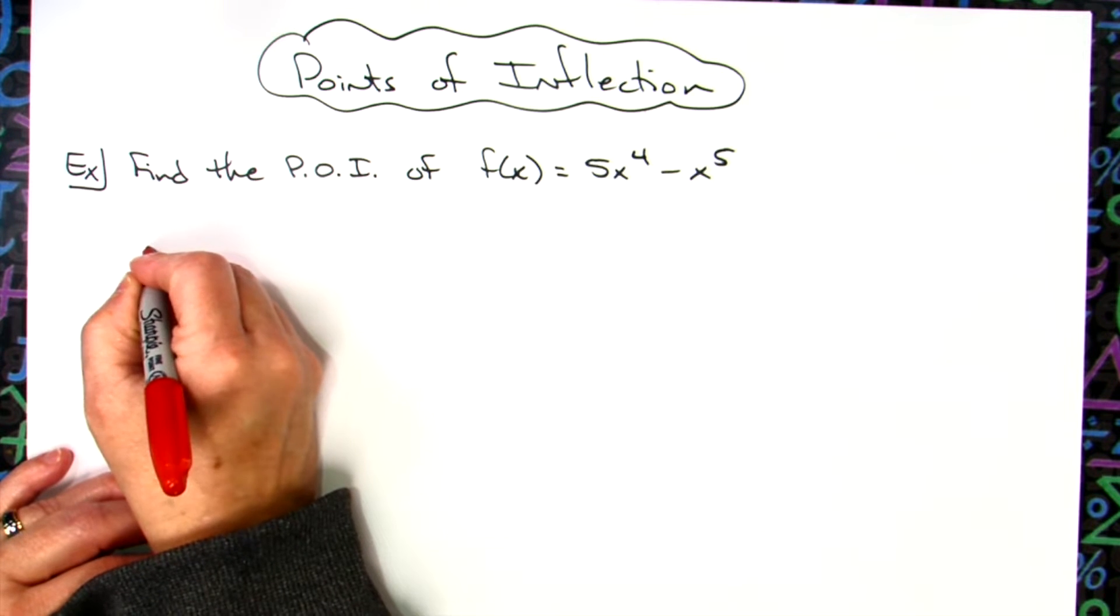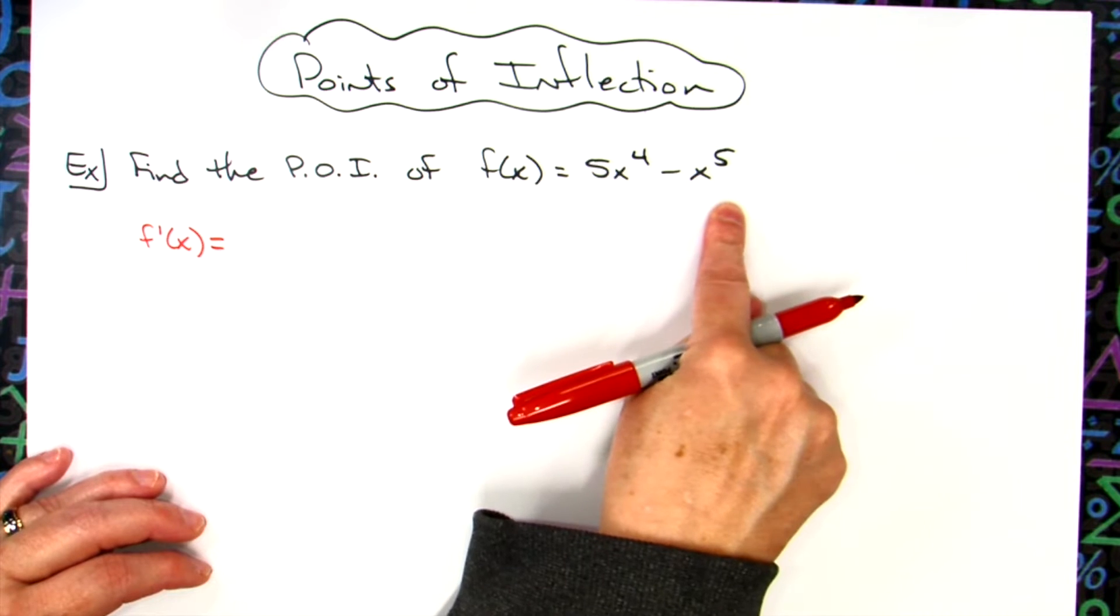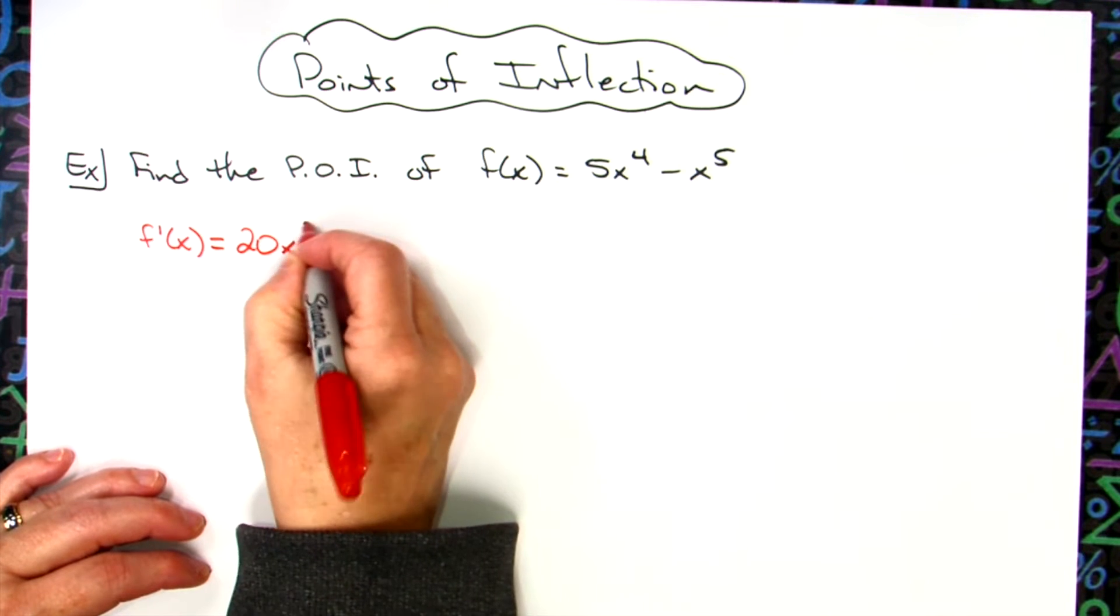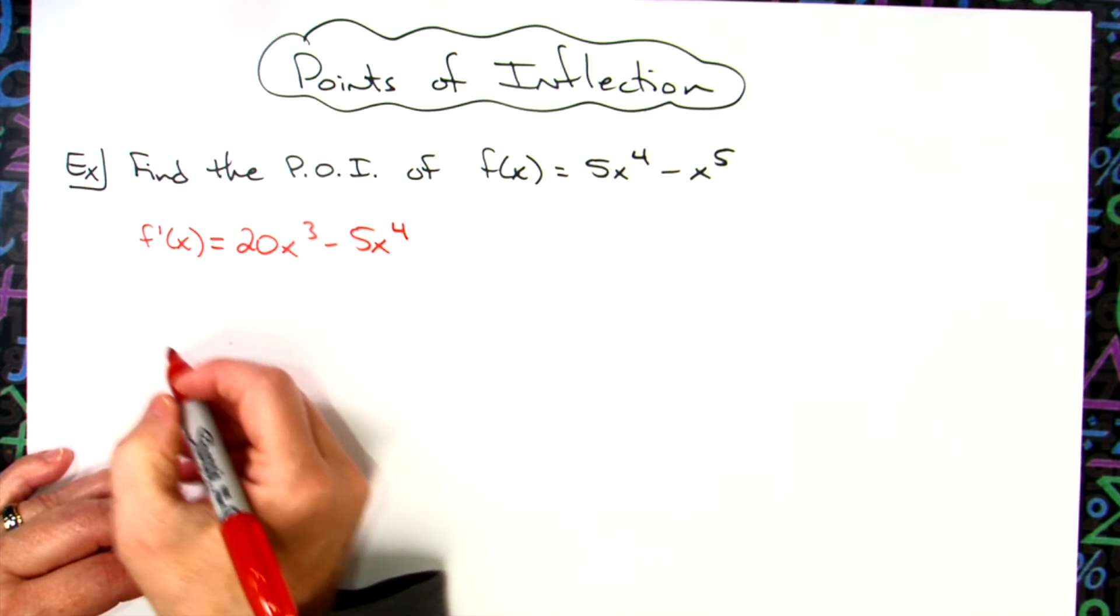So we're going to start here by finding our first derivative. It's a nice polynomial curve, so this is just going to be 20x³ - 5x⁴, pretty straightforward there.